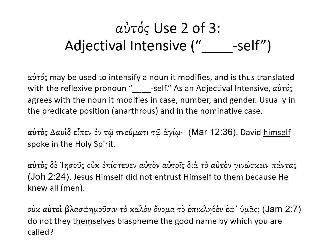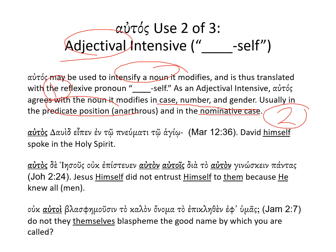αὐτός can also be used as an adjectival intensive. This is one of two adjectival uses of αὐτός. The second use is as an intensive — it can intensify a noun that it modifies, and in that sense it's acting as an adjective. It matches case, number, and gender with the noun it modifies. It's usually in the predicate position, meaning it doesn't have an article, and most often in the nominative case. Those are your two clues that αὐτός may be functioning as an intensive.